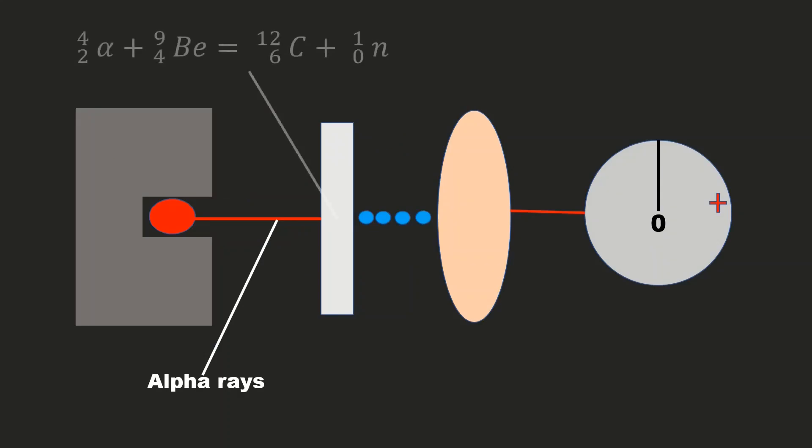What is happening here? When alpha particles hit the beryllium plate, they react with it to form carbon and neutral particles, which is invisible to the naked eye. Then he knew that it was neutrons.